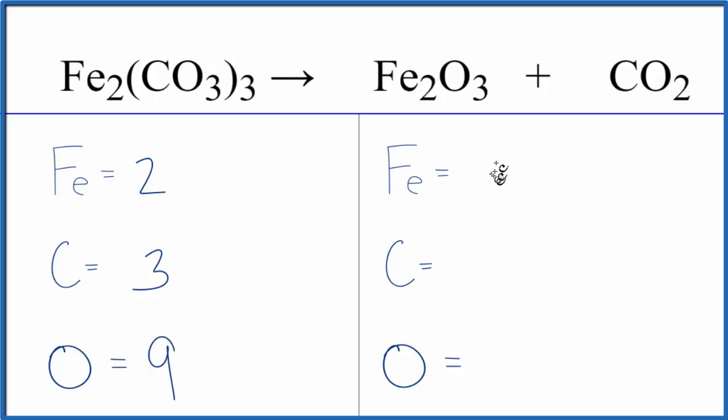On the product side, we have the two iron atoms, carbons, we only have one, oxygens, we have three, and we make sure that we count these two out here, so we have a total of five.